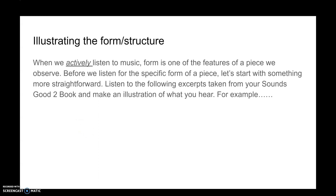There's more on this in your Sounds Good 2 book. When we actively listen to music, form is one of the features we observe — along with dynamics, texture, tonality, and instrumentation. This is different from passively listening where music is just in the background. When you actively listen, these are the specific things you focus on.